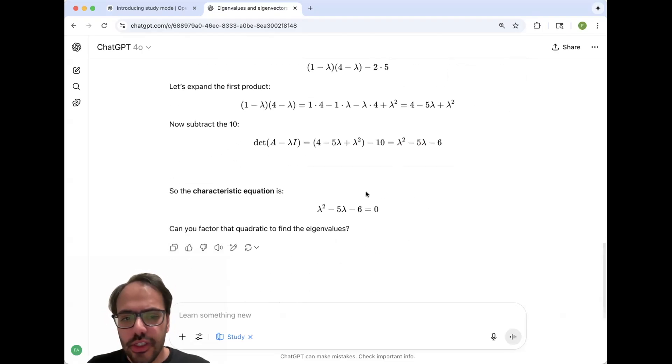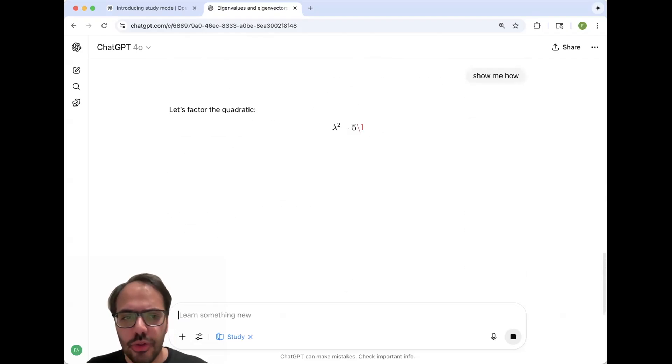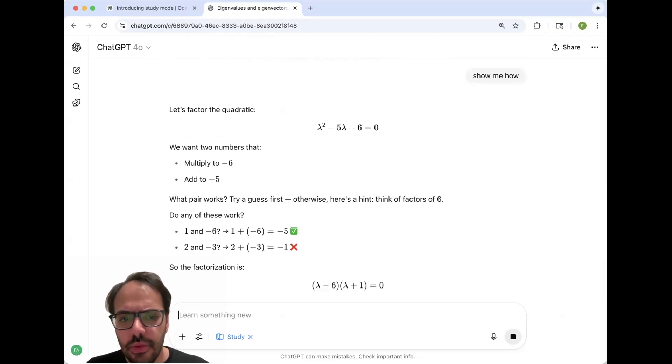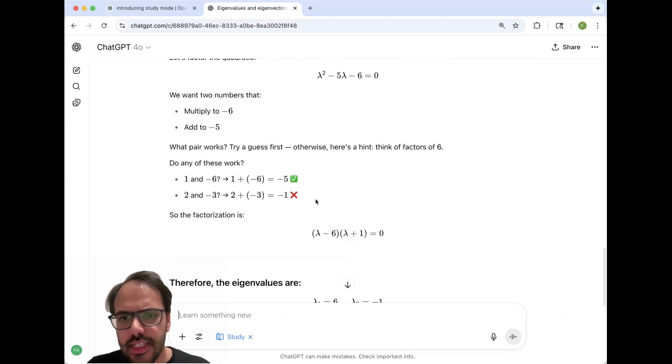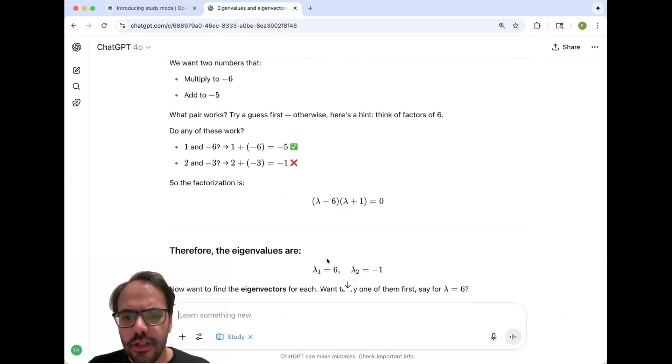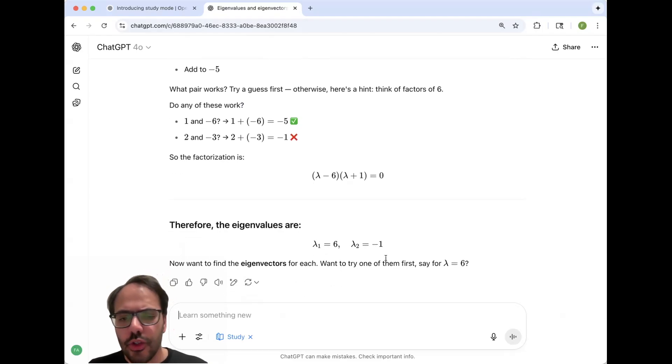And now you want to solve this equation. And it asks us if we can factor these to find these eigenvalues. And again, I can ask how to do this. This is kind of very simple. But you can see that this can be written as lambda minus six times lambda plus one. And so one solution here is six. And the other one is negative one. So now we found the eigenvalues of this matrix.